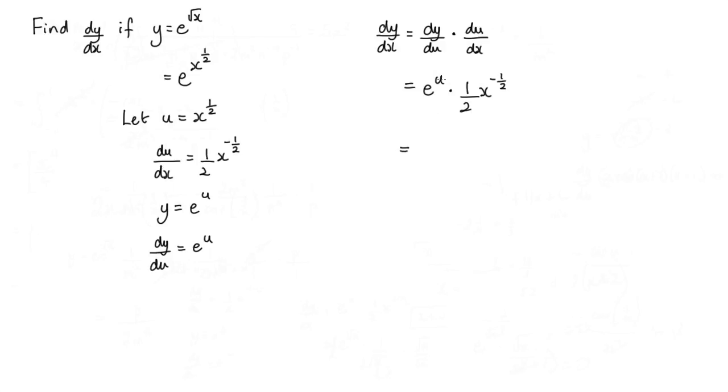Now e to the power of u, well u is x to the power of a half, which is root x. So that is e to the square root of x. Then we've got this half.